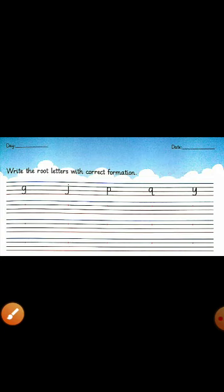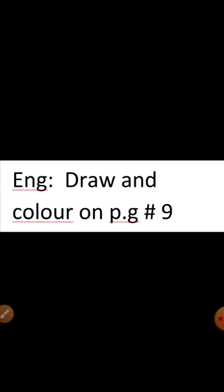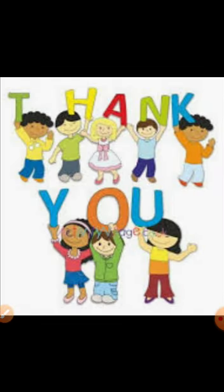G, J, P, Q, Y - these five letters are root letters. Now this is your homework: Draw and color the things which you see under the ground. Koi si bhi cheez aapne yaha par ek ya do cheez draw karni hai, jo aap under the ground dekhte hain, ground ke andar hoti hai, like roots. And anything aapko is ke alawa bhi kuch malum hai to wo bhi aap yaha pe draw kar sakti hain. This is your homework, draw and color on page number 9. Thank you very much.